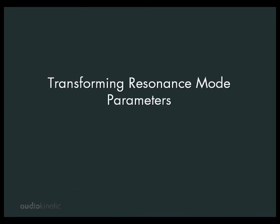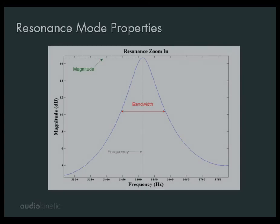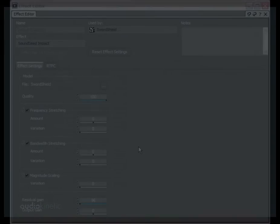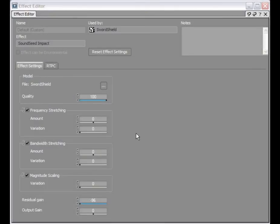If we look at the SoundSeed Impact WISE plugin, you will notice that it contains a series of properties. These properties control the frequency, bandwidth, and magnitude of the resonance modes within our model file. By transforming the resonance modes, we can create very specific or totally random transformations, resulting in unlimited playback variations from a single source file. The transformation parameters can be controlled in real time via real-time parameter controls, allowing you to change the characteristics of your synthesized sounds based on the context of the game.